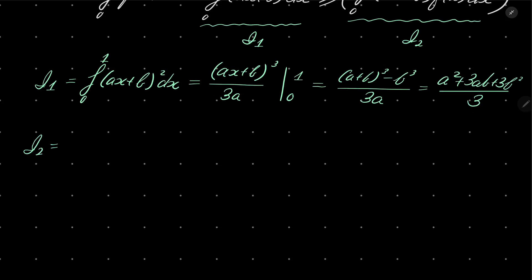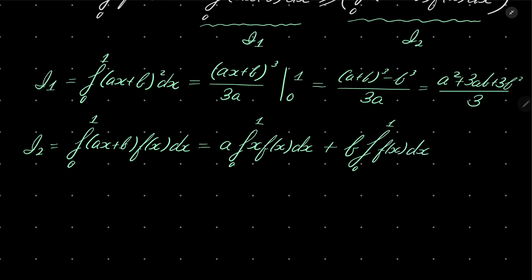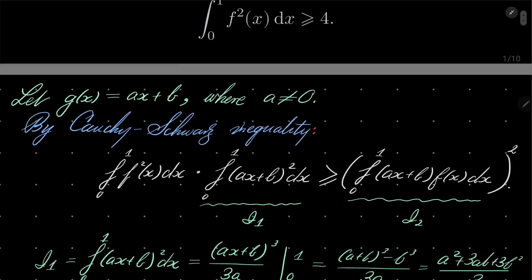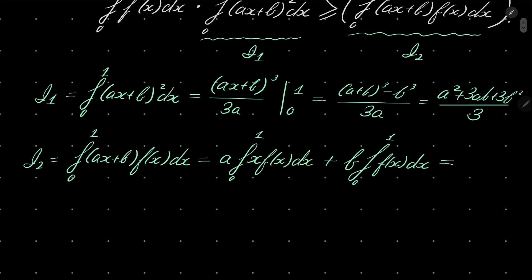What about the second integral? Integral from 0 to 1 of ax plus b times f of x dx. It can be written as a times integral from 0 to 1 of x times f of x dx plus b times integral from 0 to 1 of f of x dx. By our assumption, both of these integrals equal 1, so it's just a plus b.